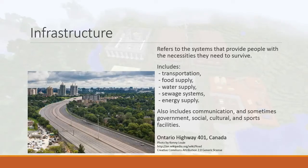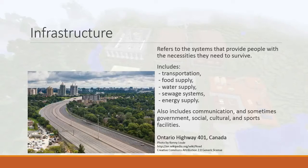That picture there is the Ontario Highway 401 in Canada — I think that's supposed to be the busiest highway in Canada. It was closed for something when the photo was taken, but otherwise it would be full of cars. Infrastructure includes things like transportation, food supply, water supply, sewage systems, energy supply, and communications.